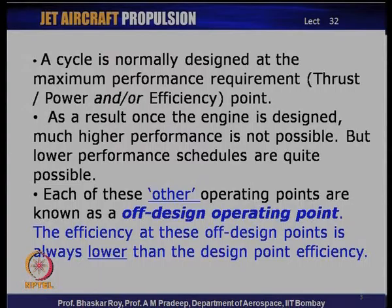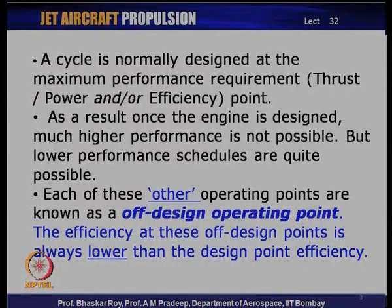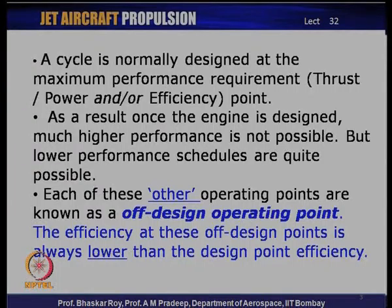An aircraft is designed on the basis of a thermodynamic cycle designed in detail in earlier lectures. This cycle is normally designed at the maximum performance requirement. Once an engine is designed and created, achieving much more performance beyond the design point is normally not possible — perhaps 5 to 10 percent more, but no more. As a result, the engine must be able to give thrust at lower performance levels required for various other aircraft operations, and all these other operating points are known as off-design operating points.